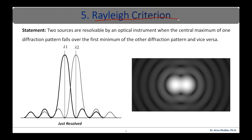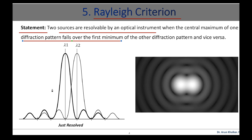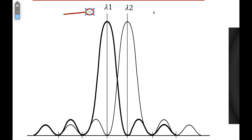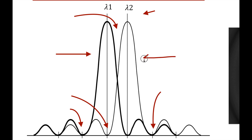Now let's see what is Rayleigh's criterion of resolution. The statement states that two sources are resolvable by an optical instrument when the central maxima of one diffraction pattern falls over the first minima of the other diffraction pattern, and vice versa. When the central maximum of one wavelength coincides with the first minima of the other, as shown in this diagram, the resultant intensity curve shows a distinct dip in the middle of two central maxima. Therefore, the two wavelengths can be distinguished from one another, and according to Rayleigh's criterion, they are said to be just resolved.